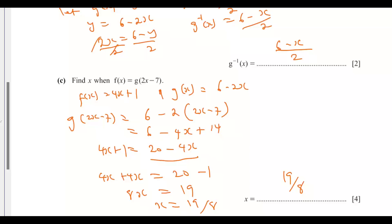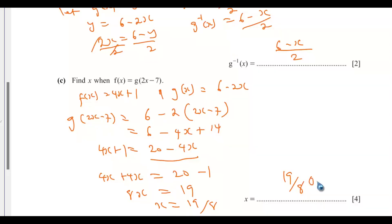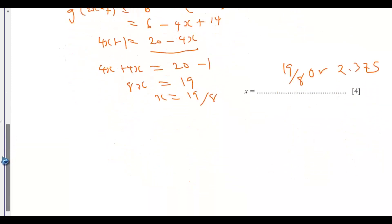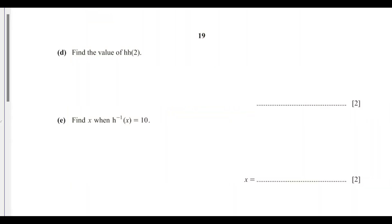Writing x as a decimal: 19 divided by 8 equals 2.375. So x equals 2.375.